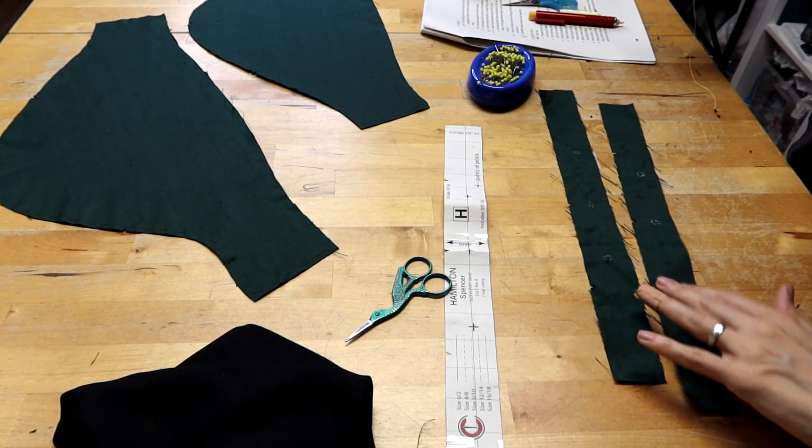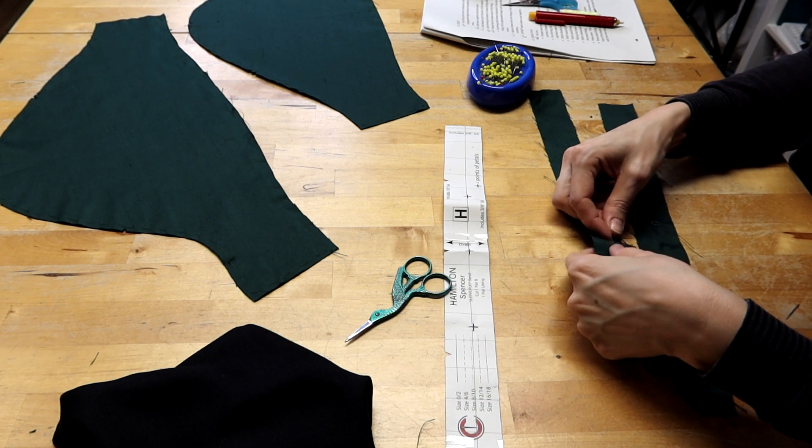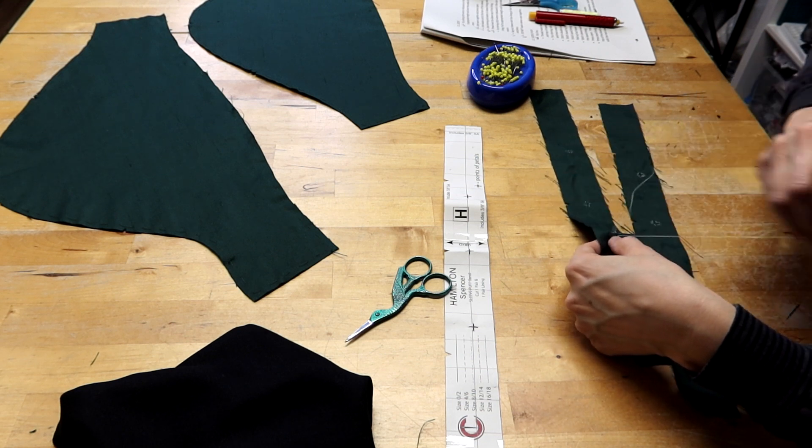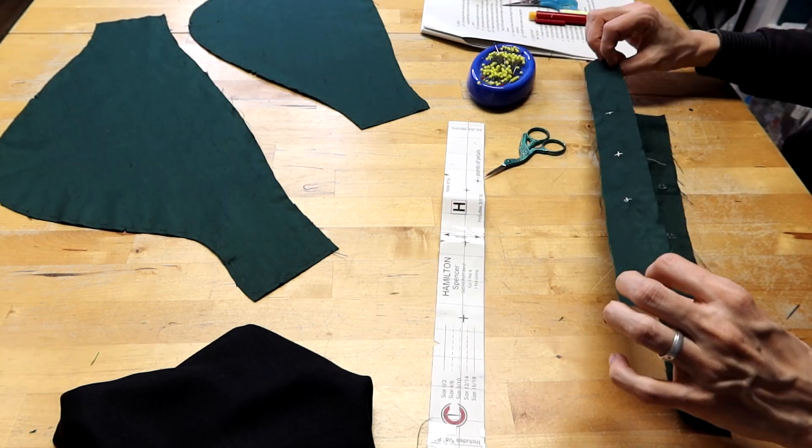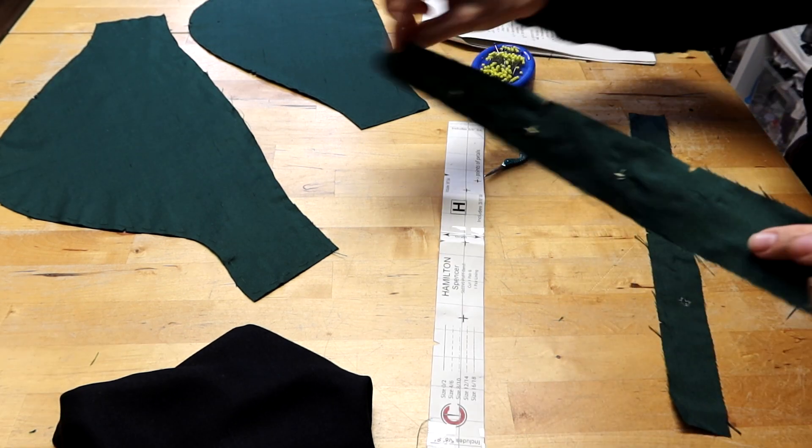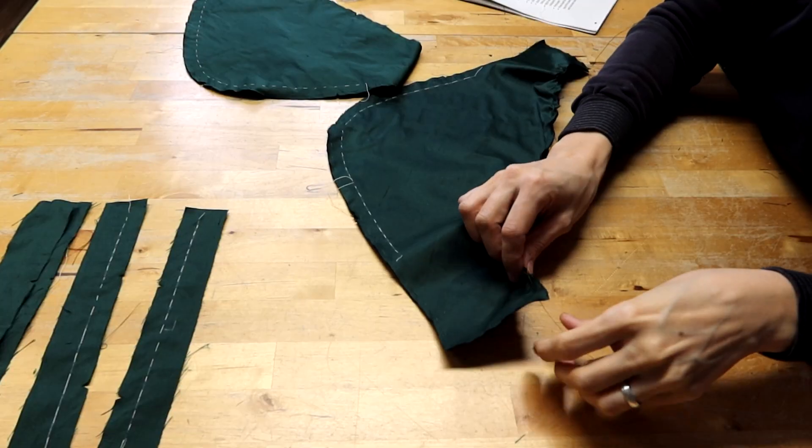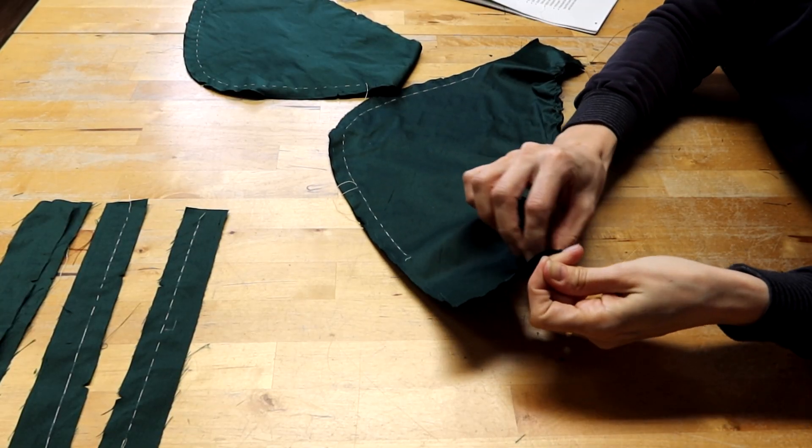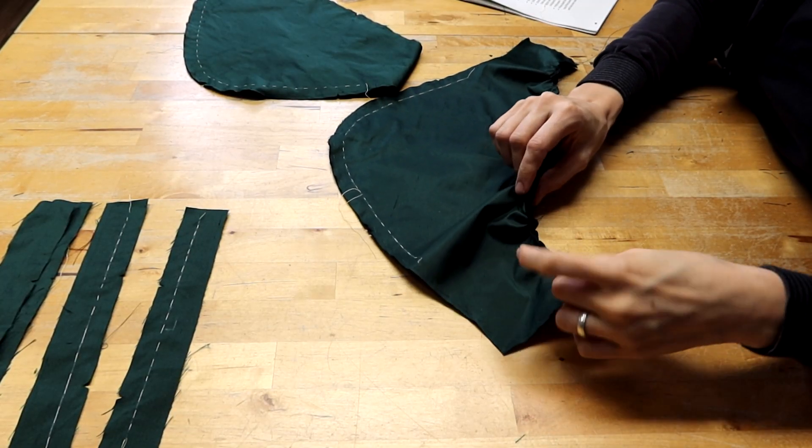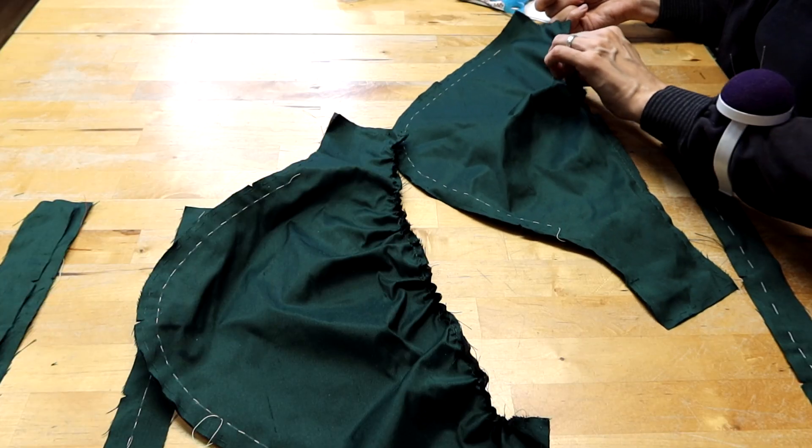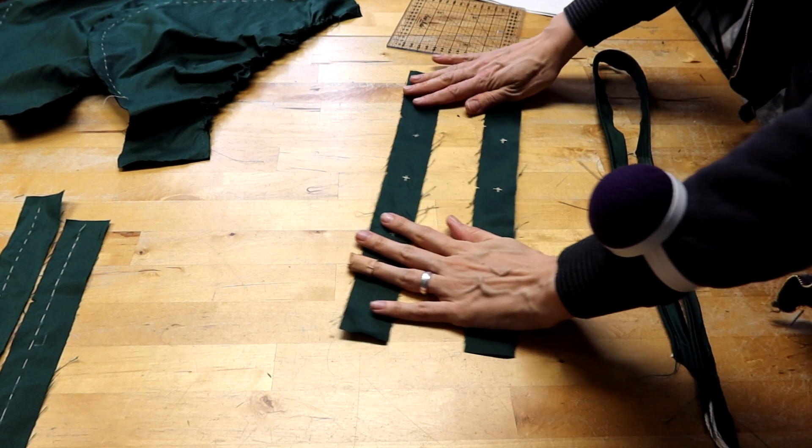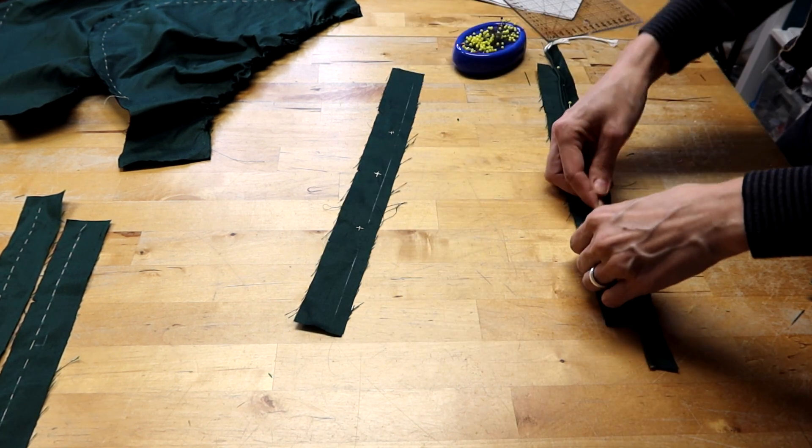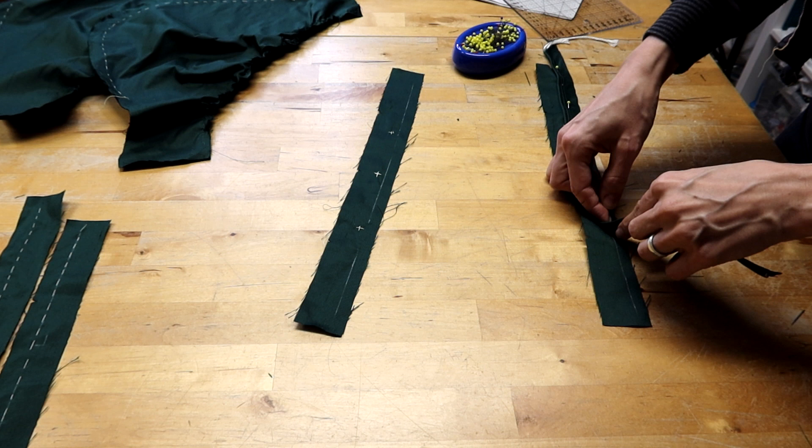Next on my list were the sleeve puffs. These are gathered into these little sleeve bands which I had to mark with the thread tracing. I needed these markings for the sleeve petals later on. And of course a little more piping.